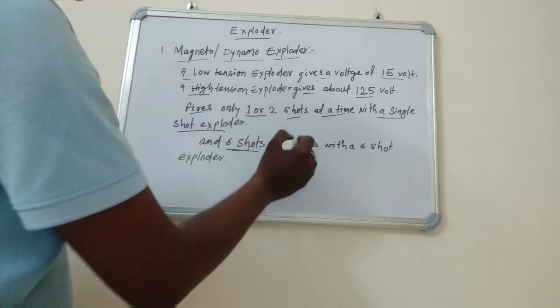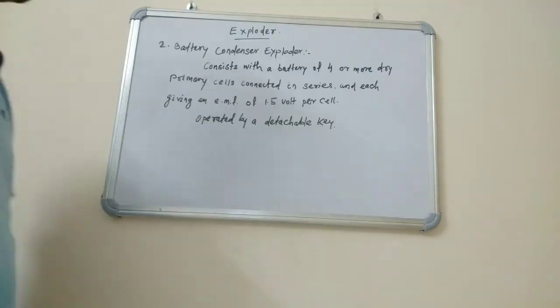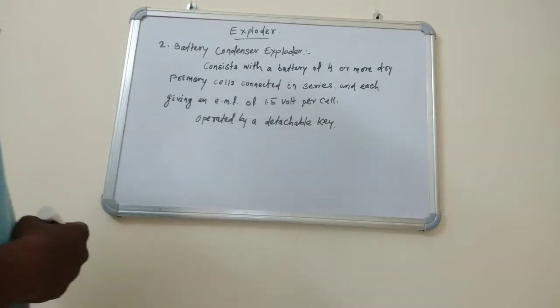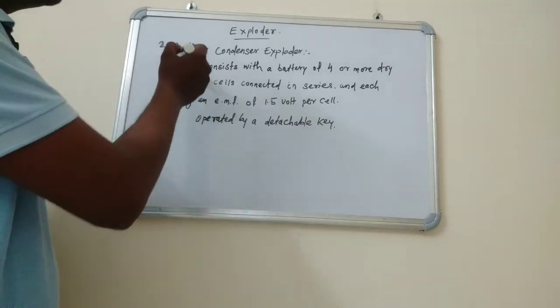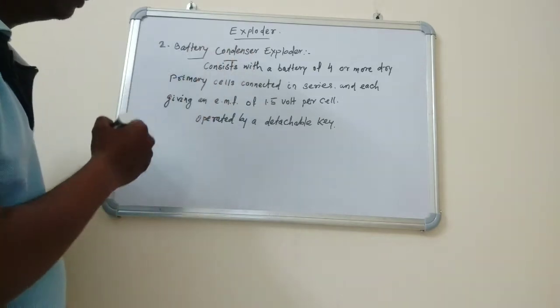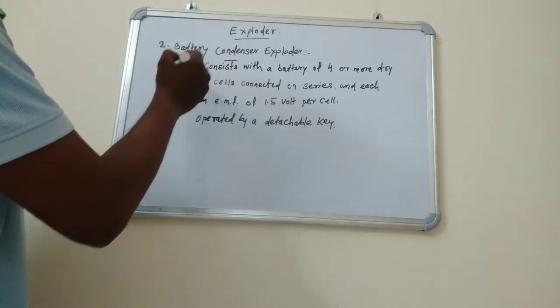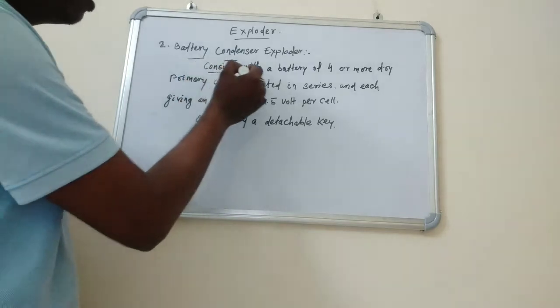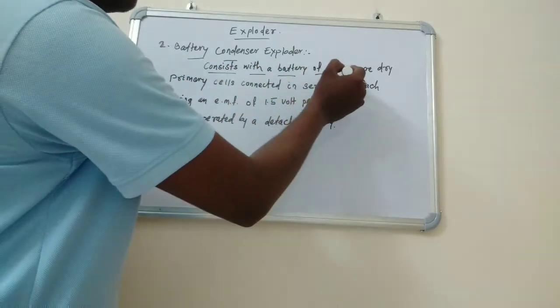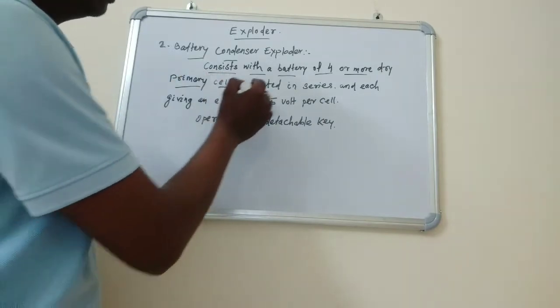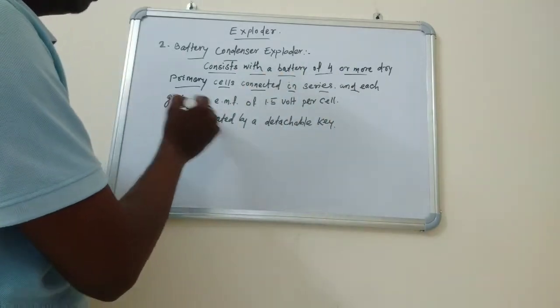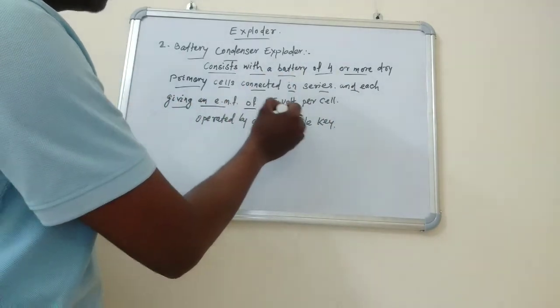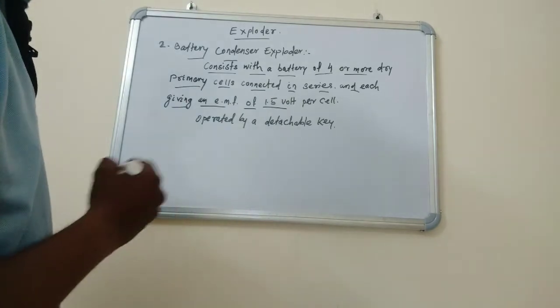Second is battery condenser exploders. This type of exploder consists of a battery of four or more dry primary cells connected in series, each giving an EMF of 1.5 volts per cell.